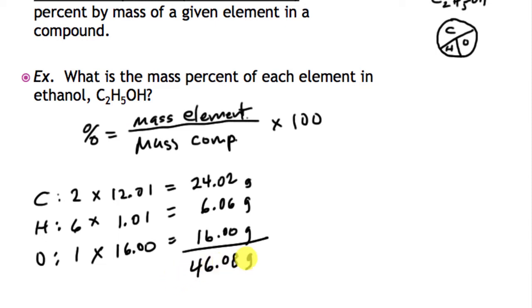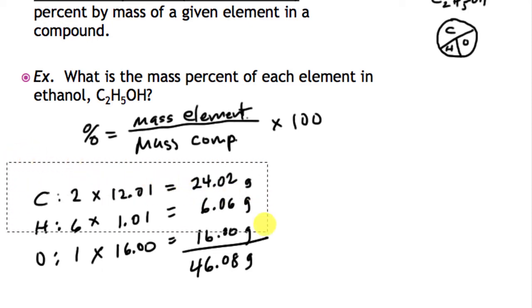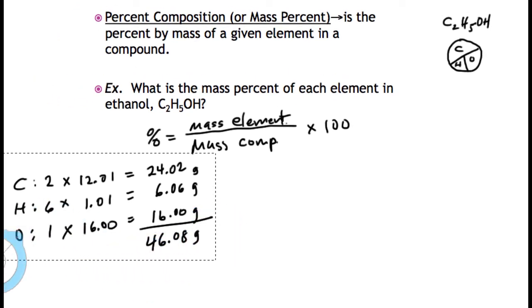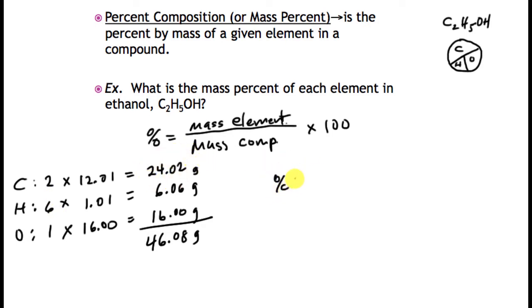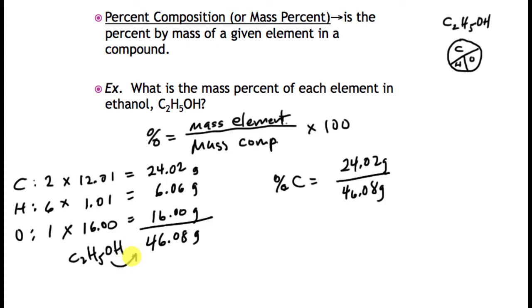The total mass of this compound is 46.08 grams. To figure out the percent of carbon, I take the carbon mass — 24.02 grams — and put that over 46.08, which is the total mass of the compound C2H5OH. Then I multiply by 100, and I get a percentage of 52.1% for carbon.